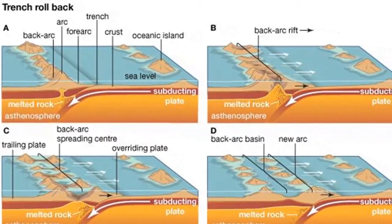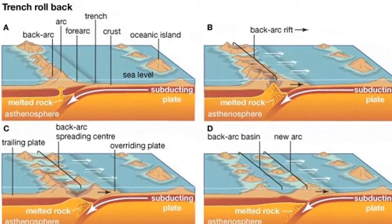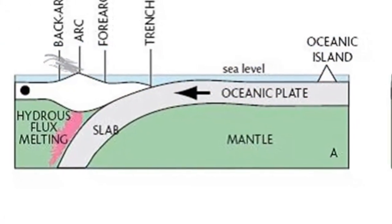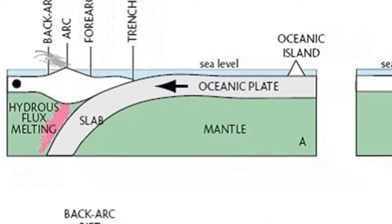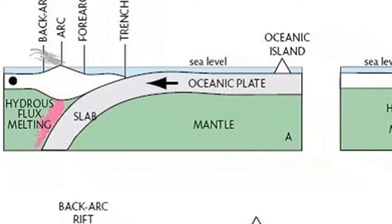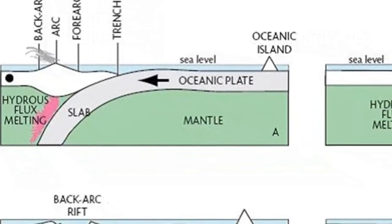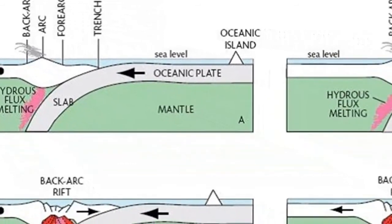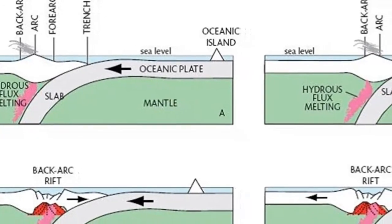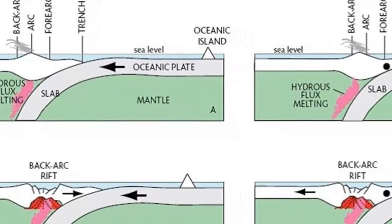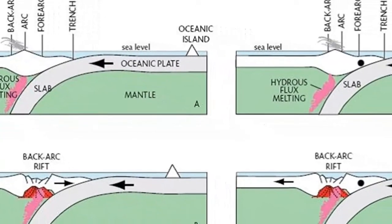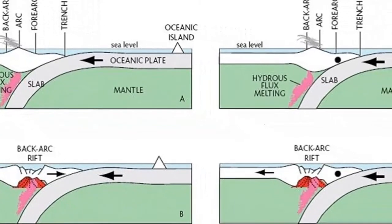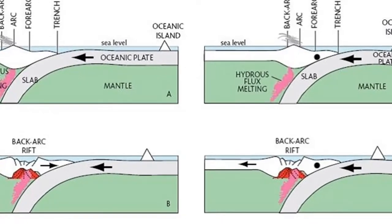Extension and back arc spreading. Along some convergent plate margins, the overlying plates are under tension, which causes stretching and thinning of the crust. But how do extensional processes operate where two plates are moving together?